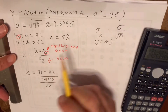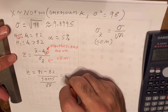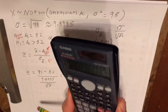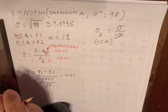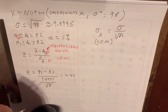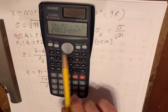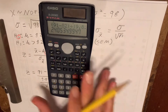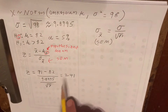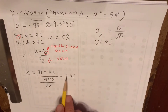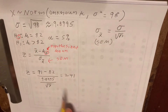The reason I rounded to the nearest hundredth is that eventually I'll be looking this up in a table, and the Z-score table gives values to the nearest hundredth.